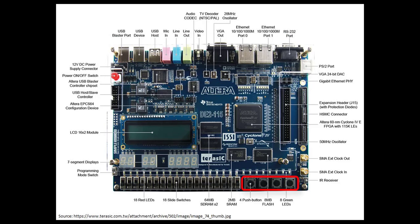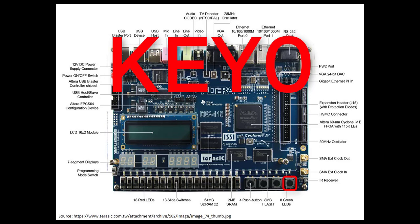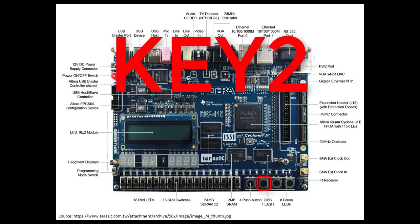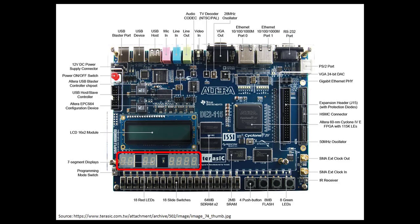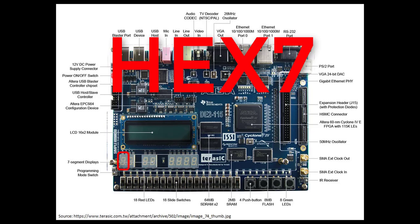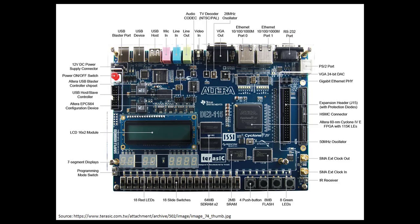These four buttons are referenced individually: key0, key1, key2, and key3. Up here are the hex digits — each digit is made up of seven segments that can light up. Each digit has its own multi-bit port and they're labeled hex0 through hex7. The ports are seven bits, with each bit corresponding to one of the segments.